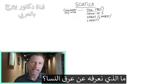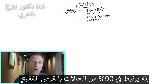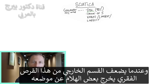Sciatica is a problem with the sciatic nerve. The sciatic nerve is the longest and largest nerve in the body. If you look at the width of your thumb, that's usually the width of that nerve where it comes out. It comes out of the lower back and the sacrum, and there are five nerves that form this one sciatic nerve. When we have a problem with that nerve, that's called sciatica.